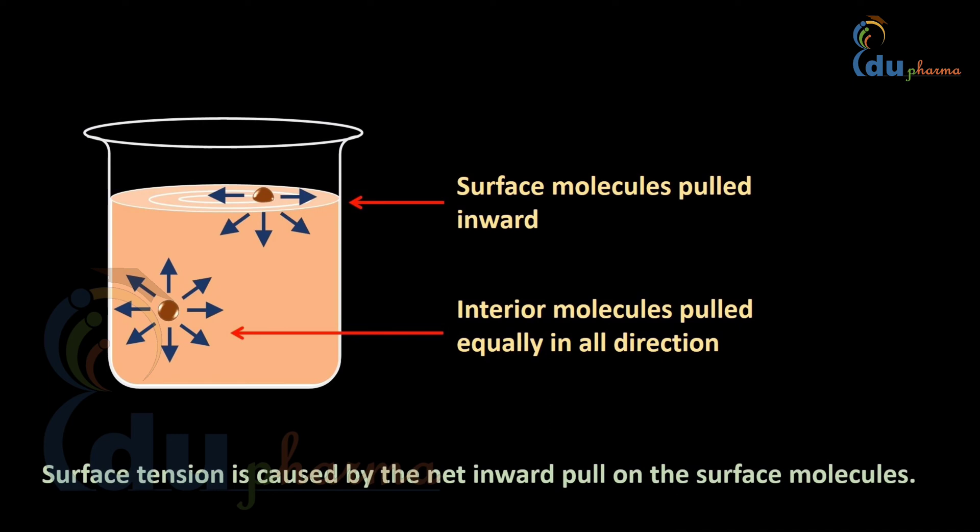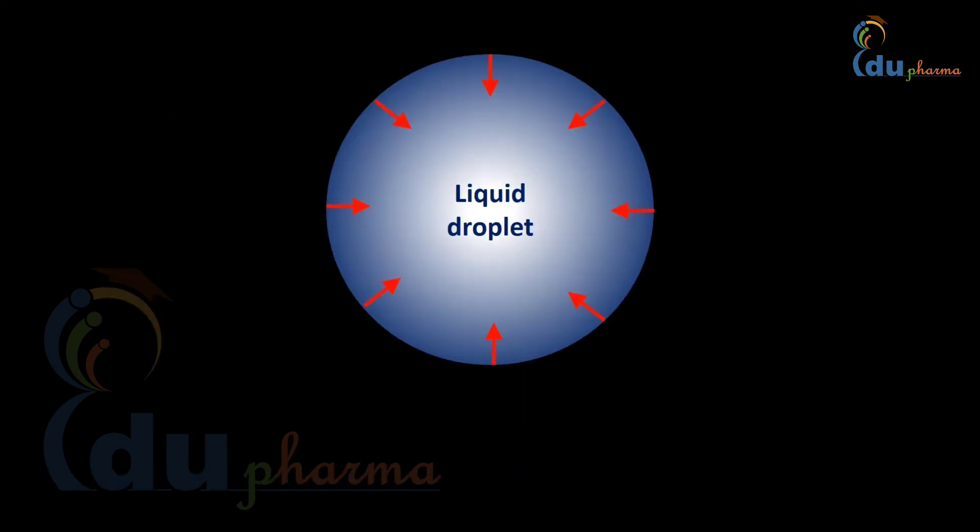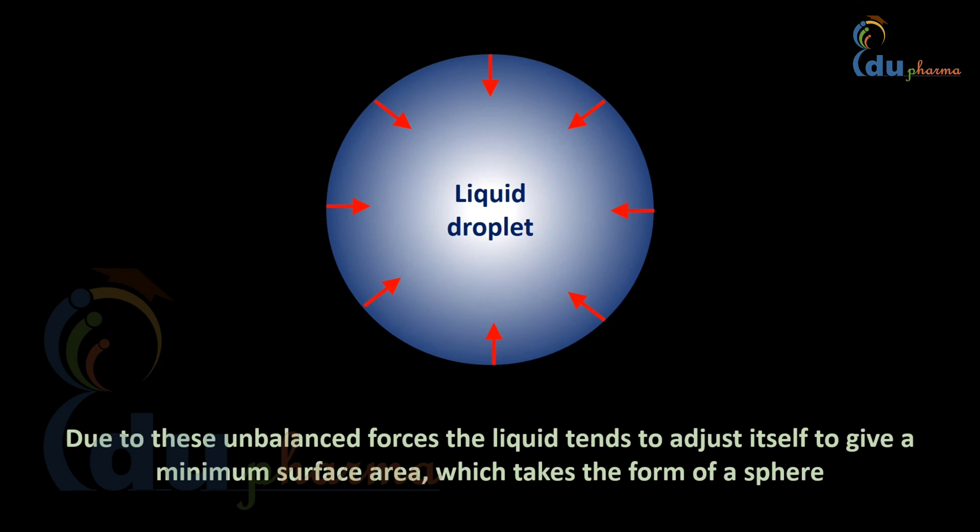Due to these unbalanced forces, the surface of the liquid behaves like a stretched elastic membrane containing the molecules of the liquid inside. Surface tension is caused by the net inward pull on the surface molecules. Since the liquid tends to contract to a minimum area, the surface of the liquid appears to be in a state of tension, which takes the form of a sphere.